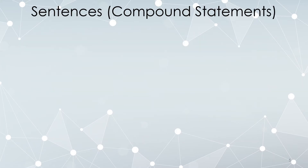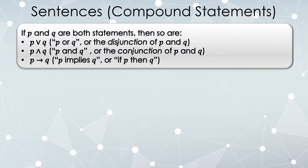We move on to the construction of compound statements, otherwise known as sentences. There are a few ways we can build more complicated statements out of smaller ones. We can put a 'V' symbol in between them, which we read as 'P or Q' — this is called the disjunction. We can also put a wedge-shaped symbol between them — this is called the conjunction. And we can put an arrow in between them to build a conditional statement: 'P implies Q' or 'if P then Q.'